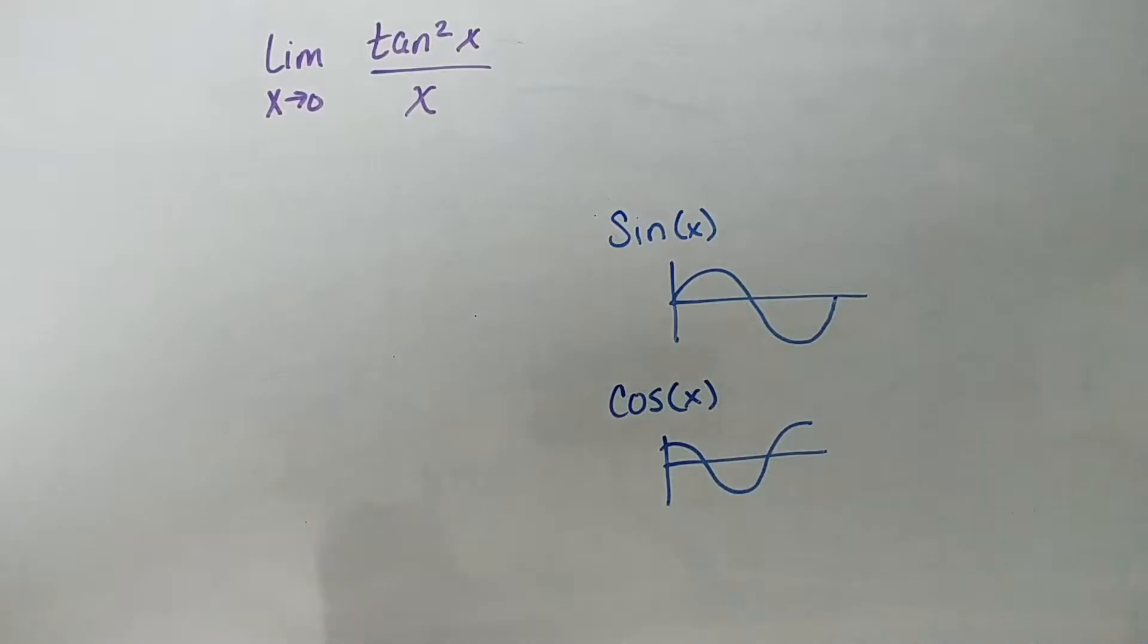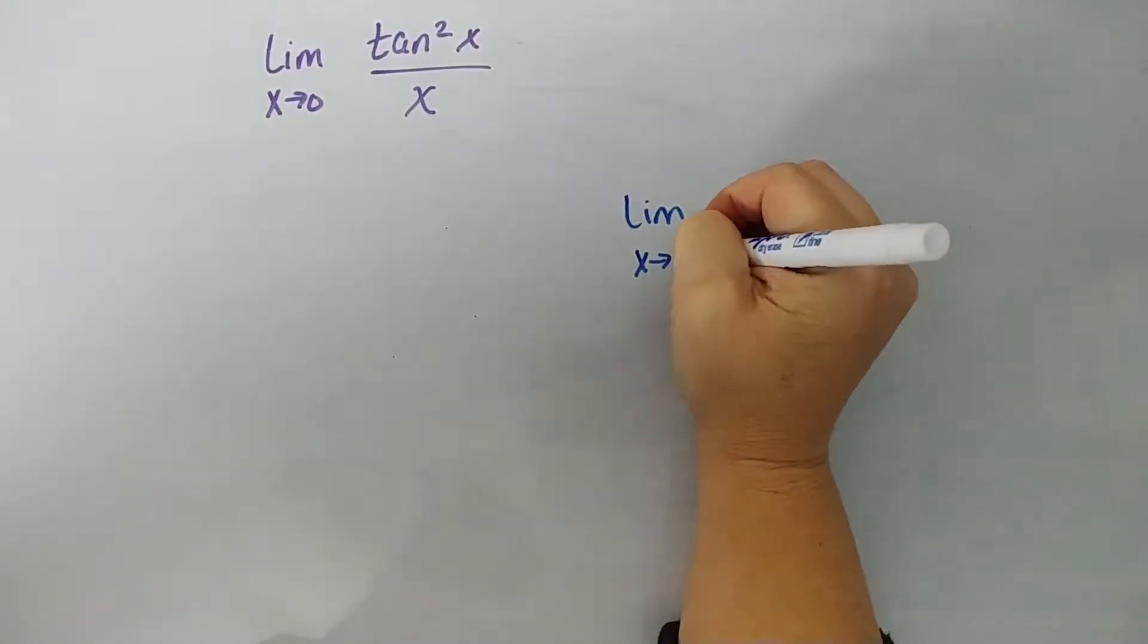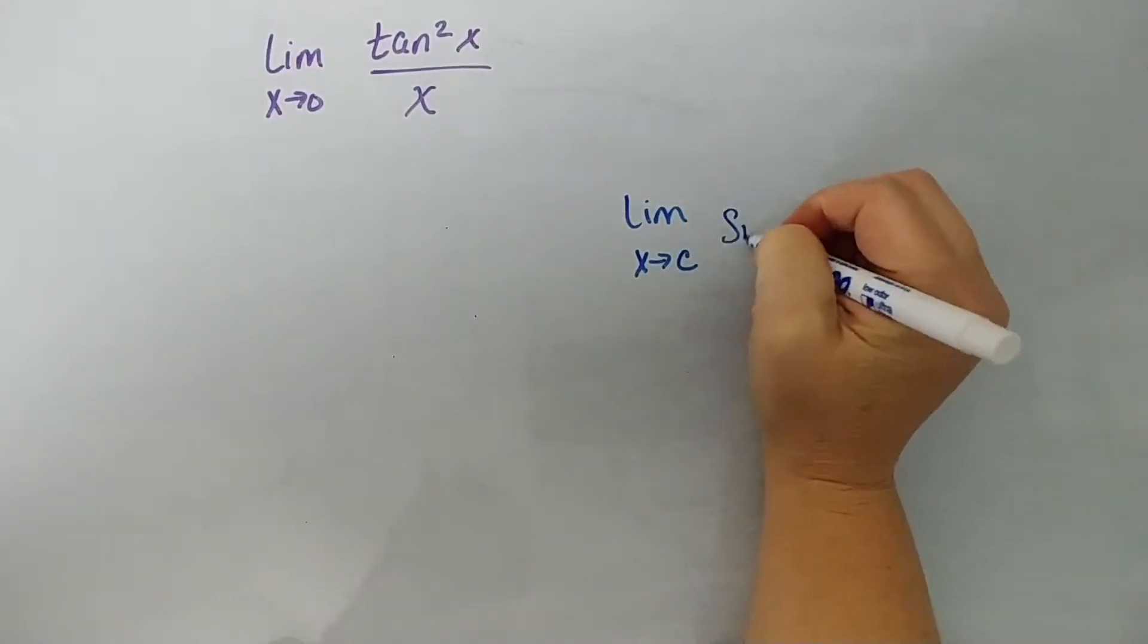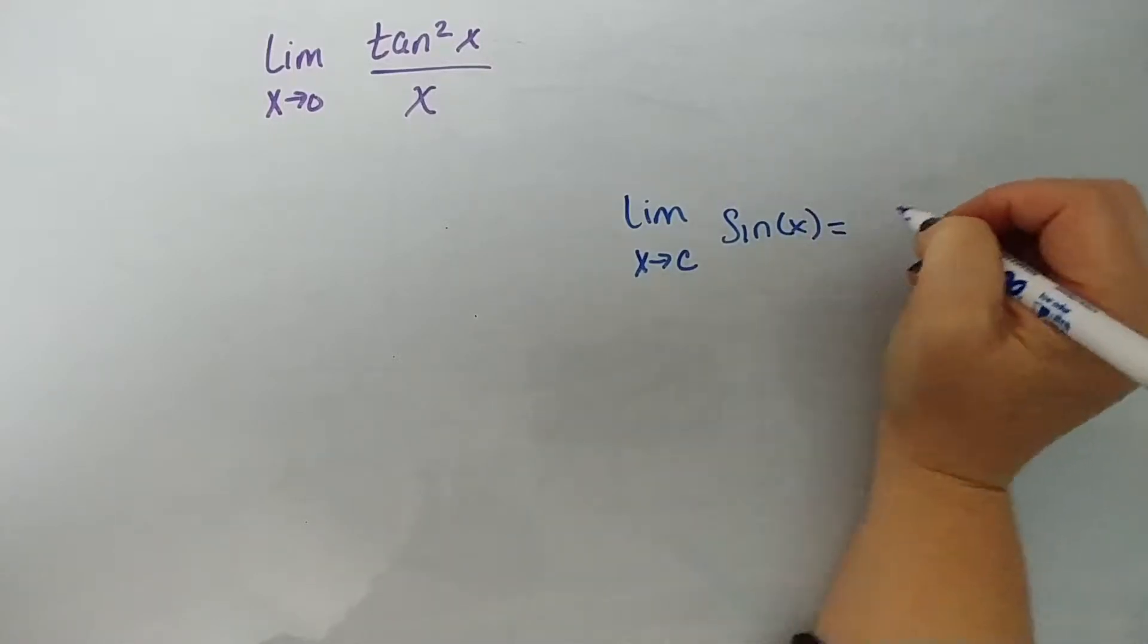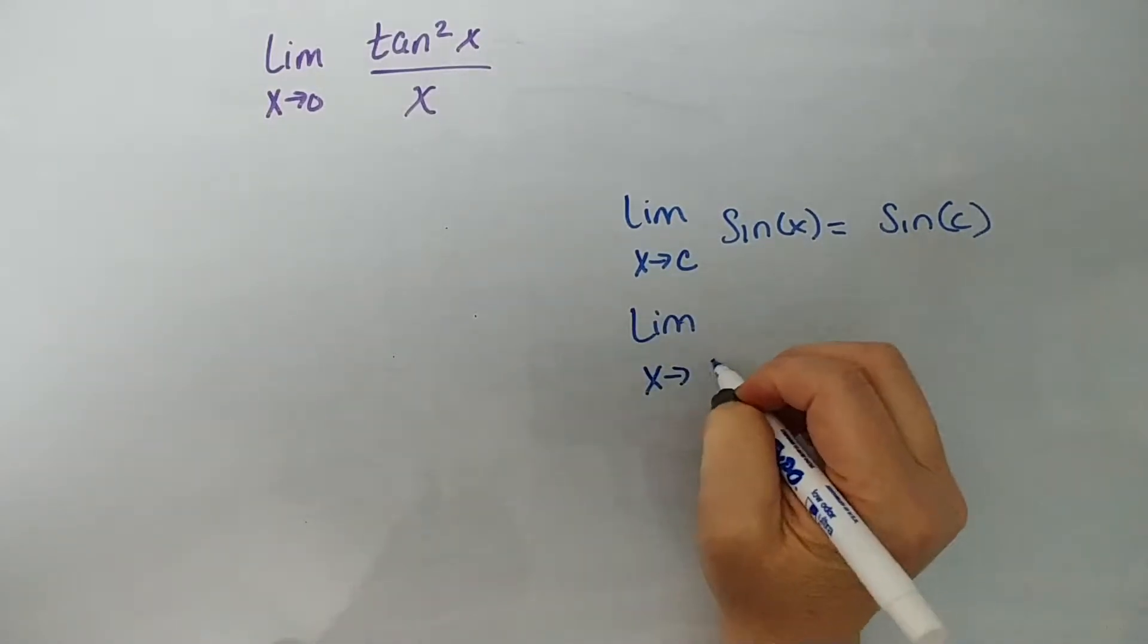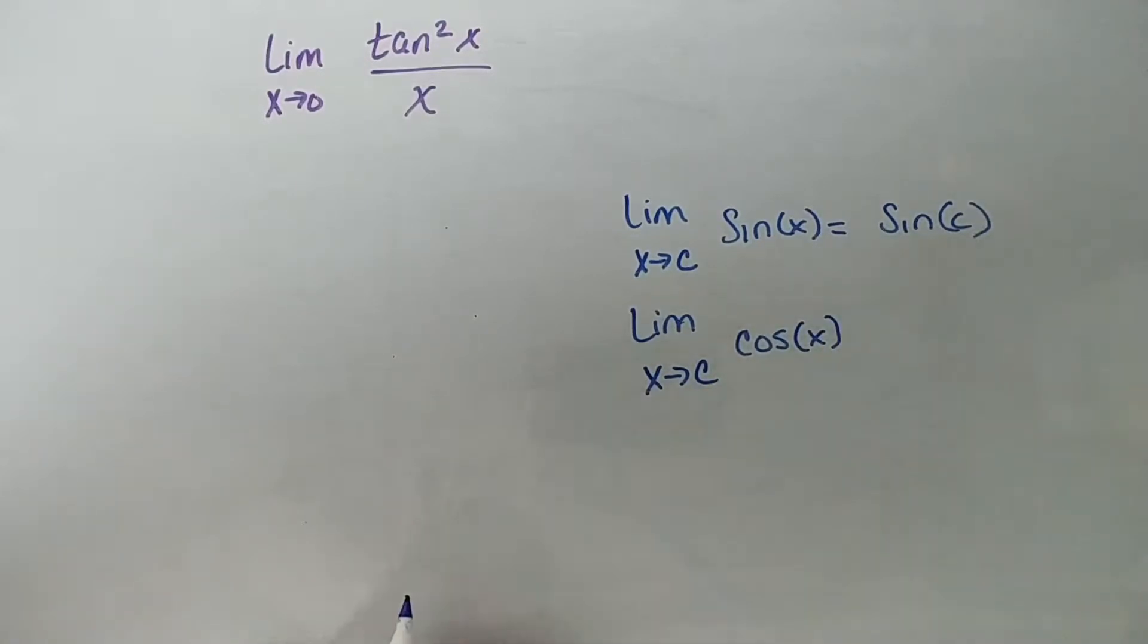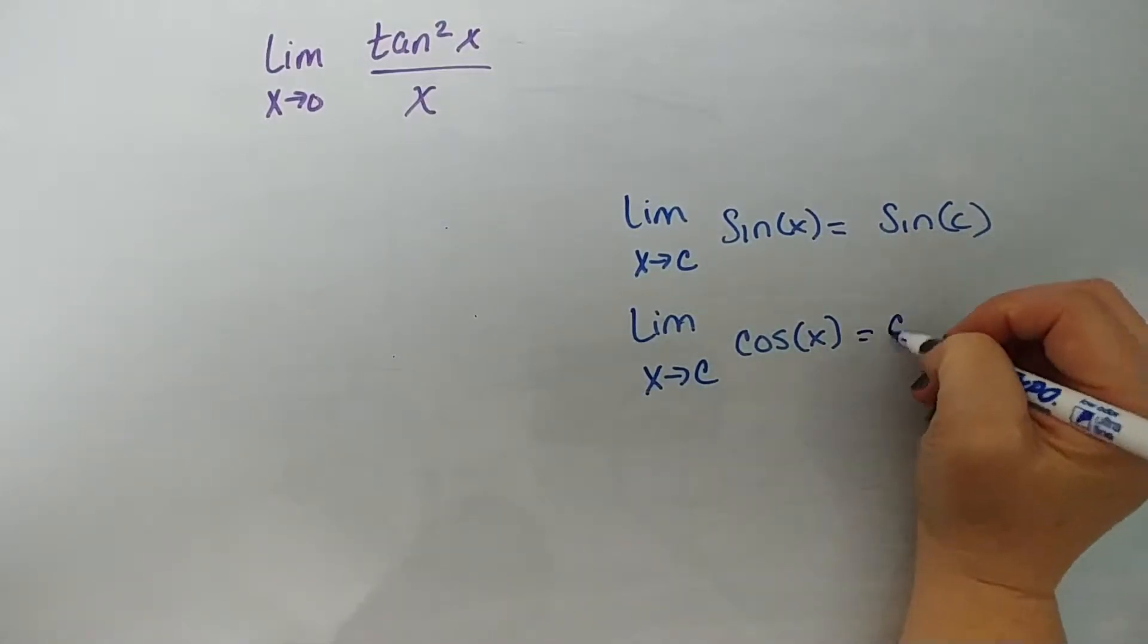So we have to look at this and say, generally speaking, the limit as x approaches c of the sine of x is equal to the sine of c, okay? Direct substitution. Same with our cosine function. So the limit as x approaches c of cosine of x is generally equal to the cosine of c.